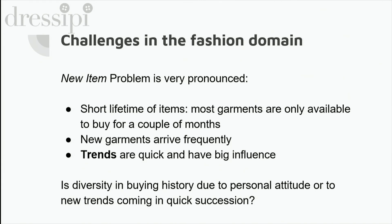This approach was applied to movie and book domains, where user preferences tend to last long. But this is not true in the fashion domain where I'm currently working, whose main issue is the so-called new item problem — the fact that items have a very short lifetime. Most garments are available to buy only for a couple of months. New garments arrive very frequently, meaning they are excluded from every kind of collaborative system since we have no feedback on them. Moreover, trends start suddenly and finish just as easily, and they have a very big influence on user decision-making.